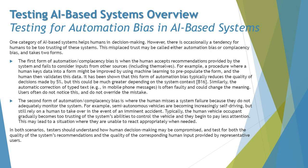We're trying to understand how exactly to test automation bias when it comes to AI-based systems. One category of AI-based systems helps humans in decision making. However, there is occasionally a tendency for humans to be too trusting of the system — becoming over-reliant. This misplaced trust may be called automation bias or complacency bias, and it takes two forms.